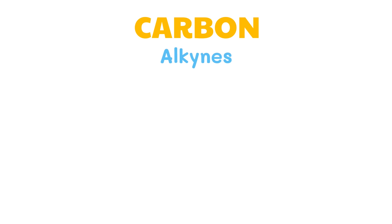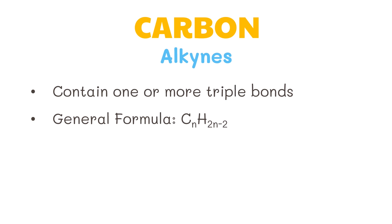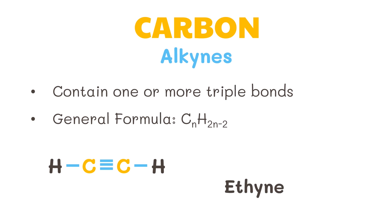Lastly, we have the alkynes. Alkynes contain one or more triple bonds. They have the general formula of CNH2N-2. The simplest alkyne, ethyne, is a highly reactive molecule used in oxyacetylene torches. The molecular structure would be C2H2.